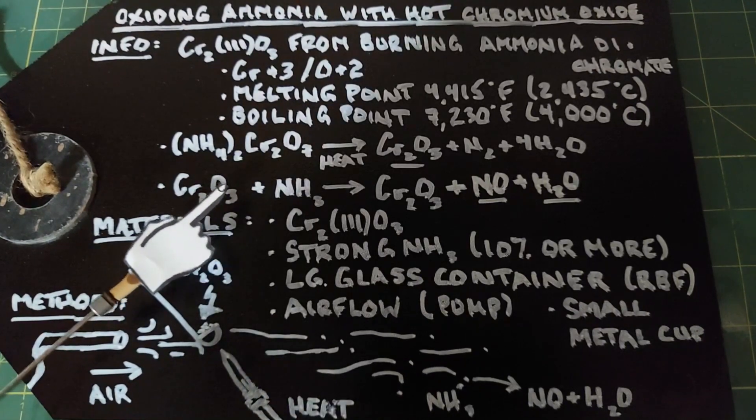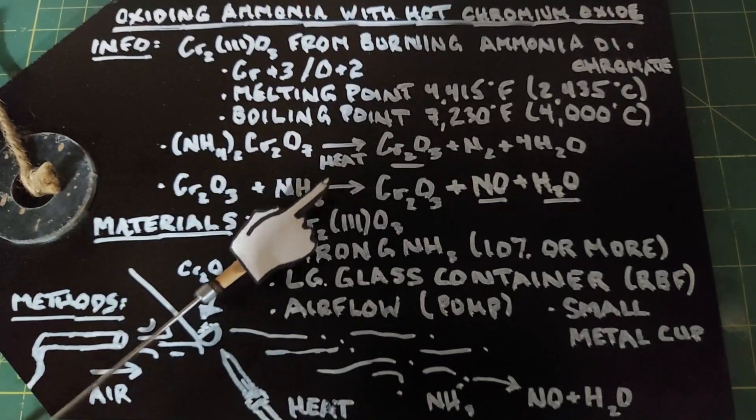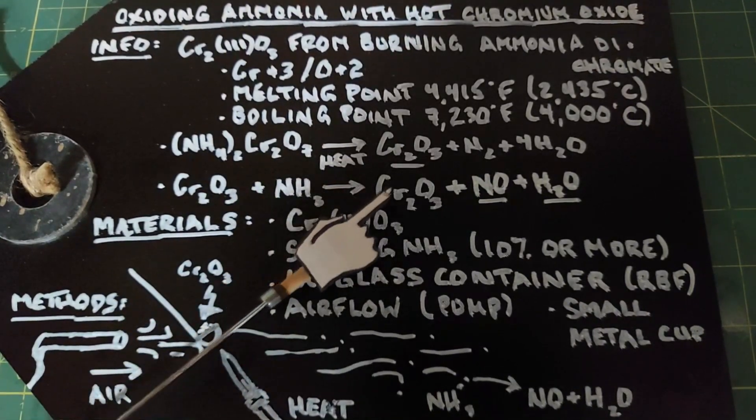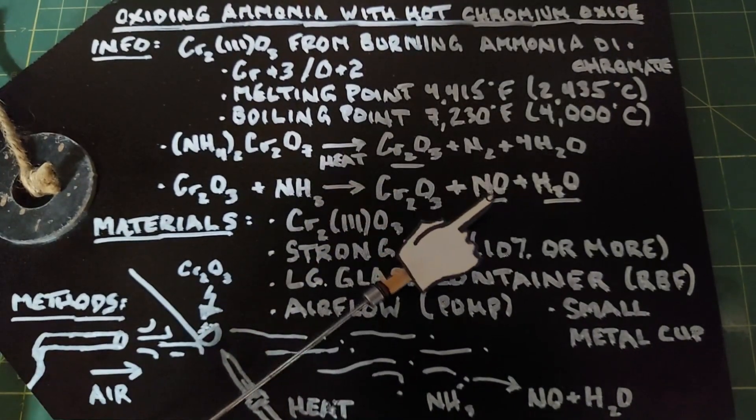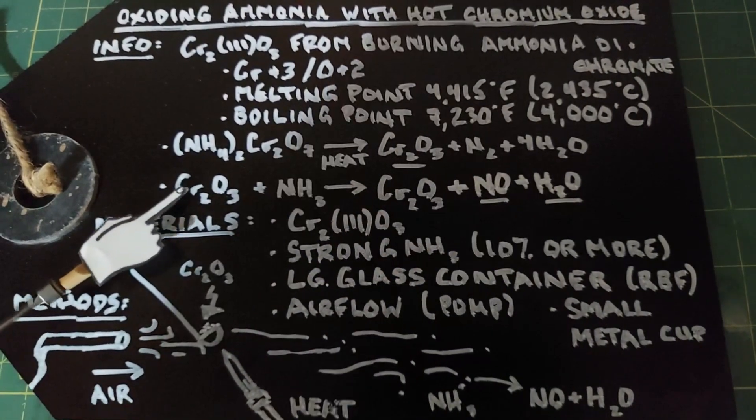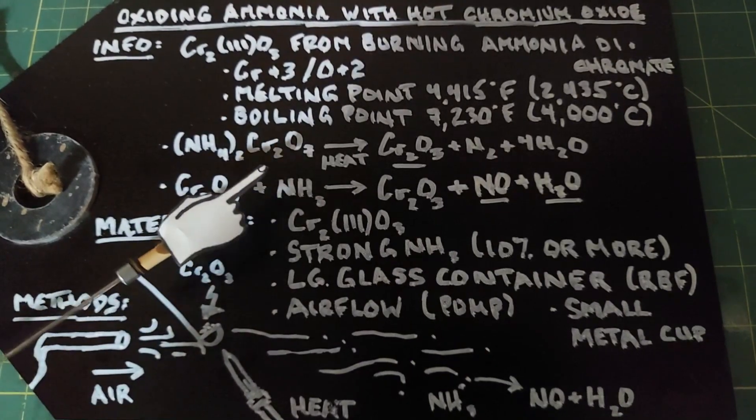As a catalyst, chromium oxide will react when it's hot with ammonia, and you end up with chromium oxide again, plus nitric oxide and water. This reaction is also of interest because of how it looks as it proceeds.